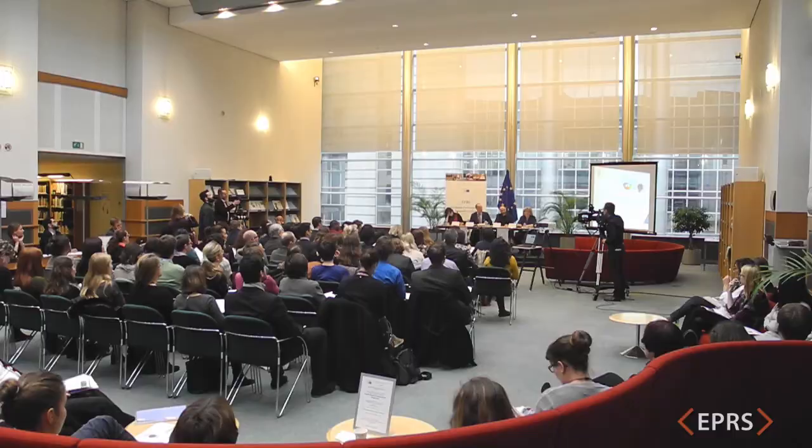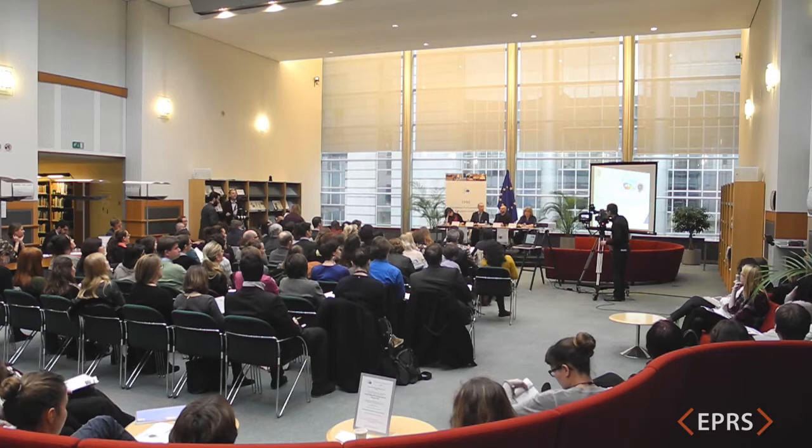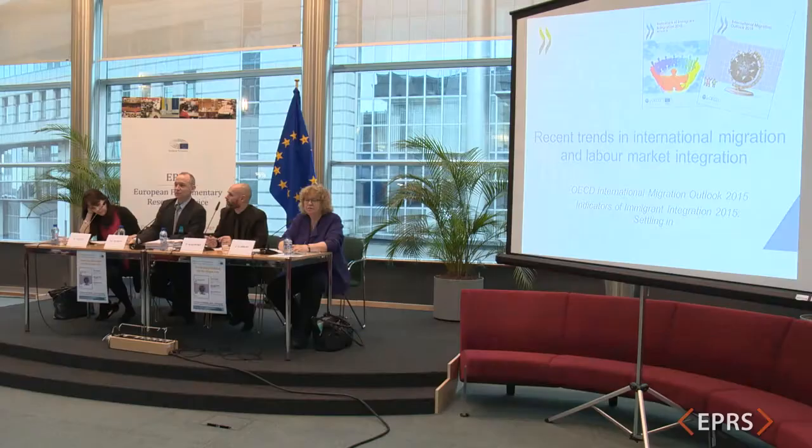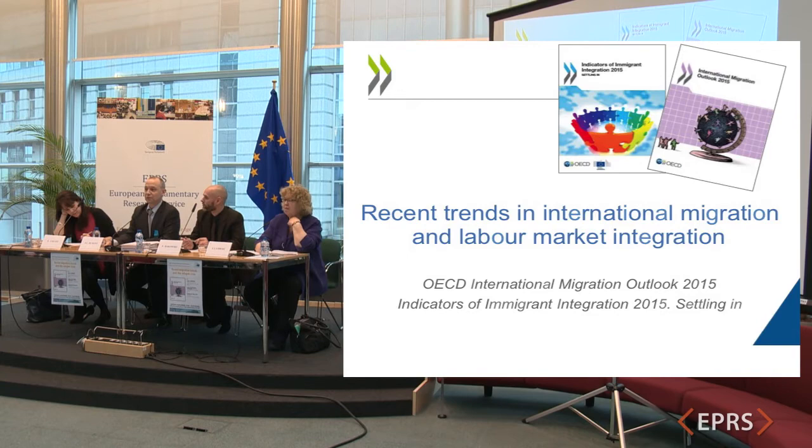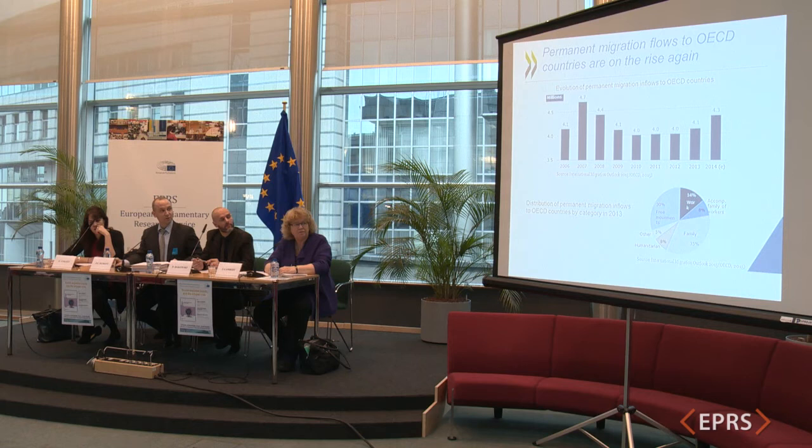Let me go through this set of slides, starting with some findings from these two publications. Also the OECD and EU indicators of integration of immigrants and their children, which was presented and released here in this House on the 1st of July in front of the LIBE committee. But let's start with some figures regarding migration trends to the OECD.